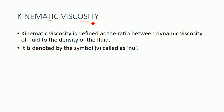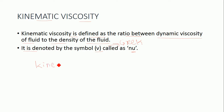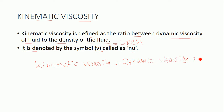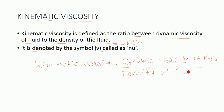Let us discuss kinematic viscosity. Kinematic viscosity is defined as the ratio of the dynamic viscosity of the fluid to the density of the fluid. It is denoted by the symbol NU, which is a Greek symbol. Hence, kinematic viscosity equals dynamic viscosity divided by density of the fluid.